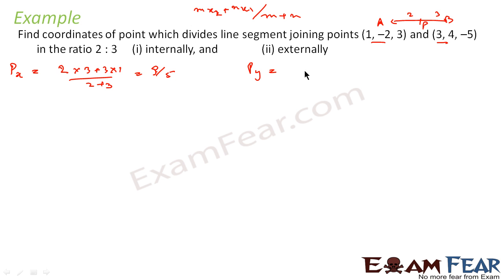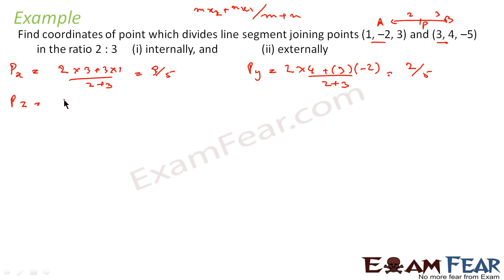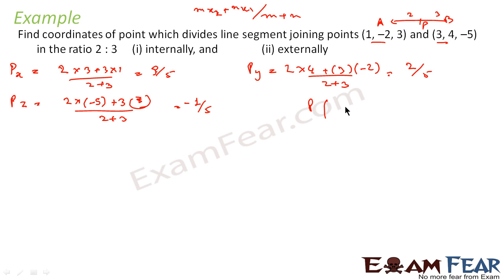For Py, using my2 + ny1 by m+n: (2×4 + 3×(−2))/(2+3) = (8−6)/5 = 2/5. For the z-coordinate: (2×(−5) + 3×3)/(2+3) = (−10+9)/5 = −1/5. So point P is (9/5, 2/5, −1/5) for internal division in 2:3 ratio.